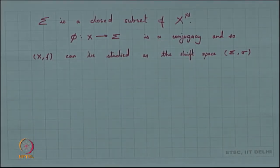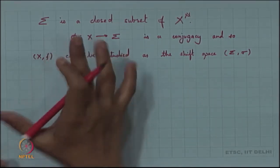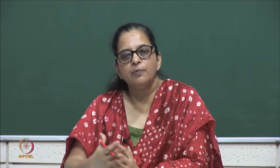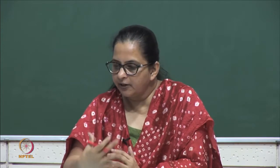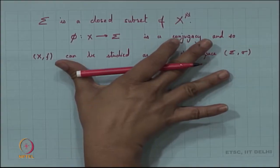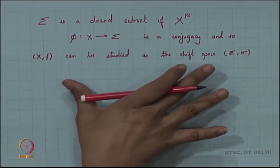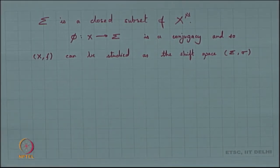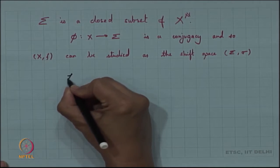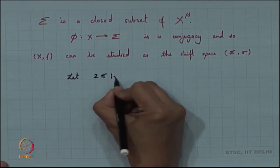Here we have a compact shift space because Σ is also compact. So now we know that these two compact spaces are equivalent and we can study any dynamical system in terms of a shift space. However, when you study a dynamical system as a shift space in this manner, we lose many of the combinatorial properties we are interested in. Most of these combinatorial properties come because A happens to be finite, giving us a finite alphabet set with rich combinatorial structure.